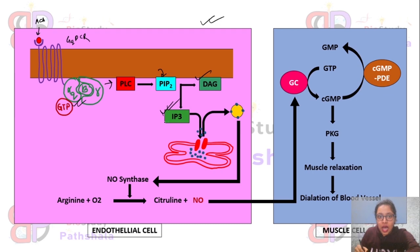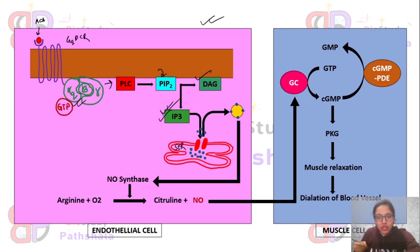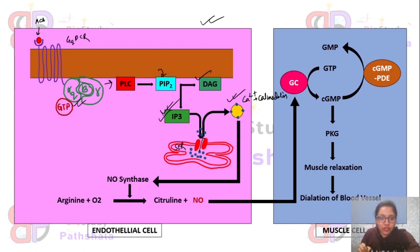DAG is a hydrophobic molecule, so it remains attached to the lipid bilayer, while IP3 is a hydrophilic molecule that solubilizes within the cytosol. This solubilized IP3 travels to the SER — smooth endoplasmic reticulum — and triggers the release of a large amount of calcium ions into the cytosol. These calcium ions bind to calmodulin, forming a calcium-calmodulin complex.